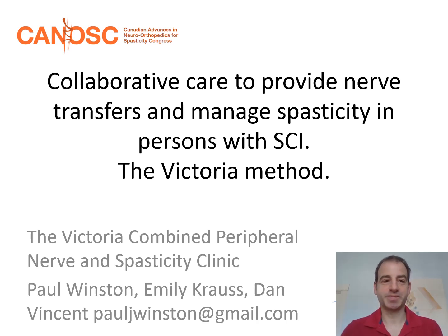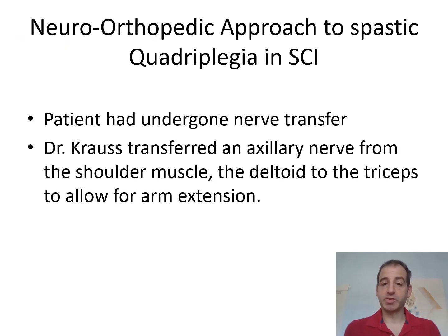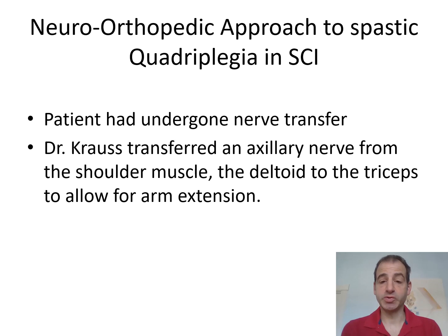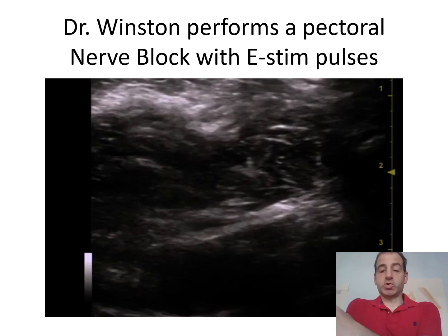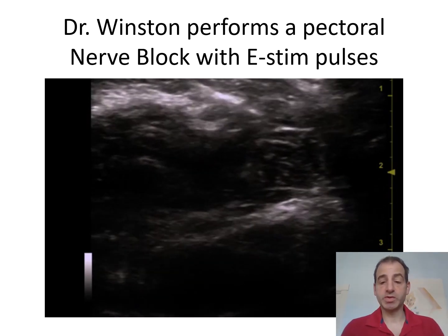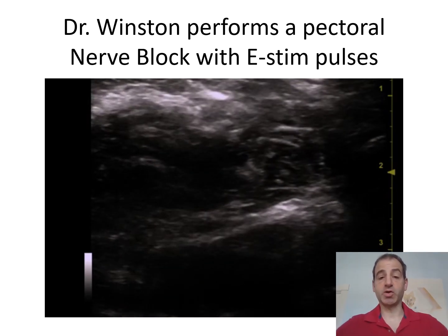I would like to present my poster. This is a novel approach to spasticity in a quadriplegic patient who had already undergone an axillary-to-triceps nerve transfer to give them elbow extension. Unfortunately, he had severe global spasticity which made it hard to use his newfound function — in particular, his shoulder adduction movement was so strong it was hard to move his elbows apart so he could go into extension.